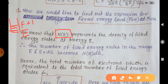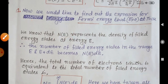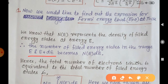If we want to calculate the number of filled energy states in the range E to E+dE, we find it by the term N(E)·dE, where N(E) is the density of filled energy states — the number of energy states per unit range of energy. Hence in the range dE, the number of filled energy states is N(E)·dE.